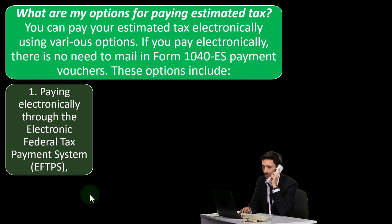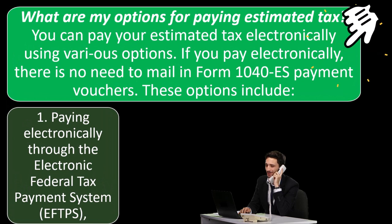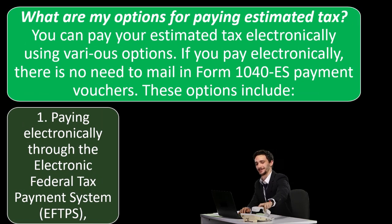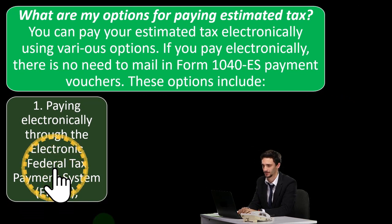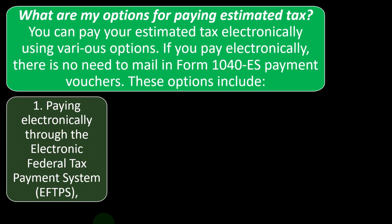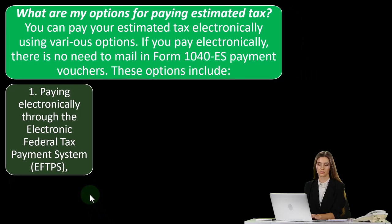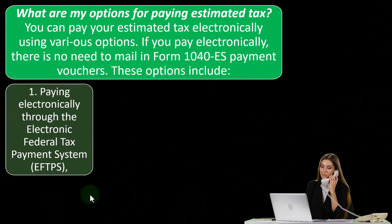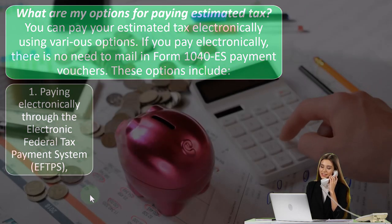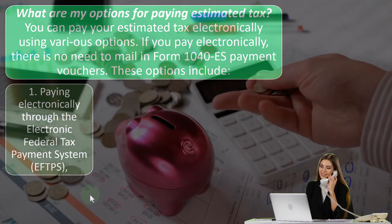What are your options for paying estimated tax? You can pay electronically using various options — if you pay electronically, there's no need to mail in Form 1040-ES payment vouchers. Before getting into the options: if you have a Schedule C business, you might be in a couple of different scenarios. You might no longer be a W-2 employee and now have a Schedule C business as your primary source of income — in that case, you're almost certainly going to have to make estimated payments unless you're running a loss.